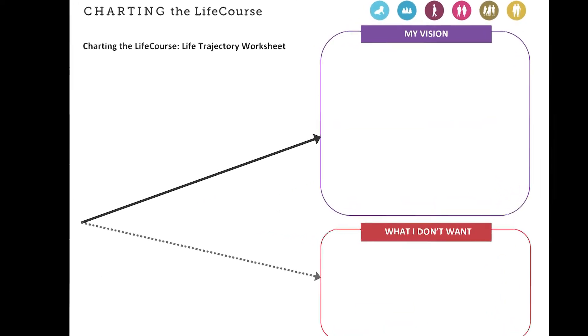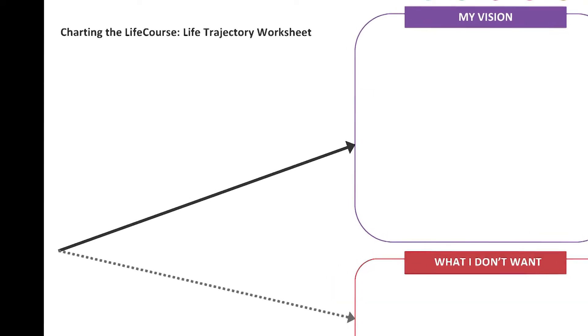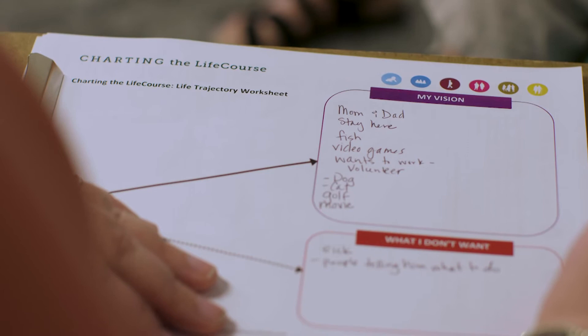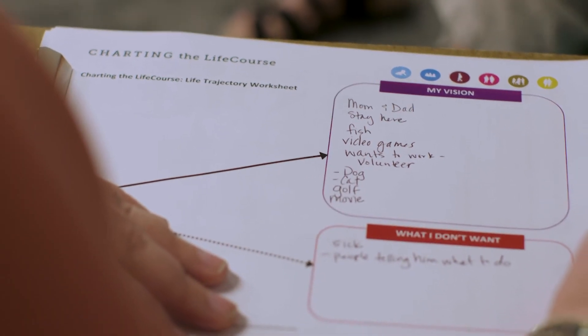There are two arrows on the left-hand side of the worksheet, one pointing to My Vision and the other pointing to What I Don't Want. You, the individual with a disability, and the person-centered planning team will use the tool to discuss and write down events that have occurred or specific goals that will lead the individual to her vision of a good life. You will also discuss the areas to avoid and what the individual does not want.